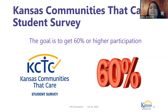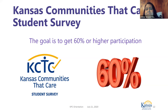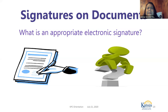I believe everyone is familiar with the KCTC — Kansas Communities That Care Student Survey. This survey measures teen substance abuse, delinquency, and related problem behaviors in schools and communities. Our goal is to have 60% of eligible students complete this survey. Our documents will require you to print out the PDF, sign it, scan it, and return it to your prevention consultant here at KDADS.